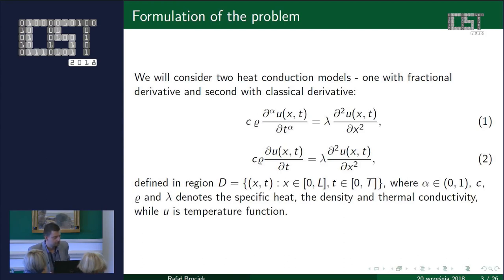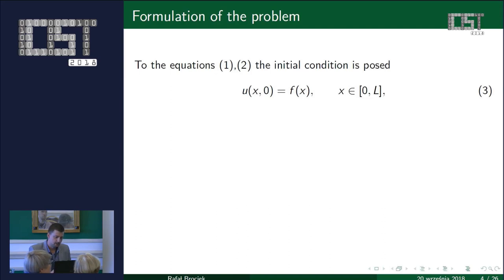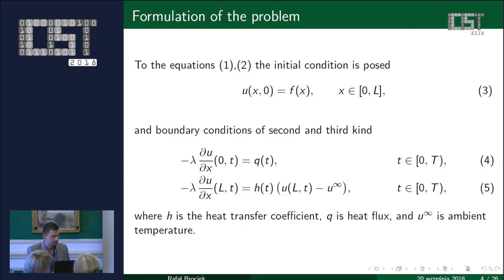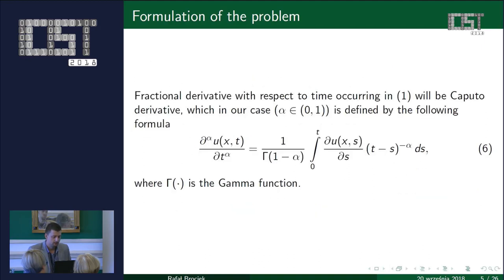In the equations, C is the specific heat, rho is the density of the material, lambda is the thermal conductivity, and U is the temperature function depending on the spatial variable x and time t. To these models we add an initial condition and boundary conditions, where H is the heat transfer coefficient and Q is the heat flux. The fractional derivative used is the Caputo fractional derivative.